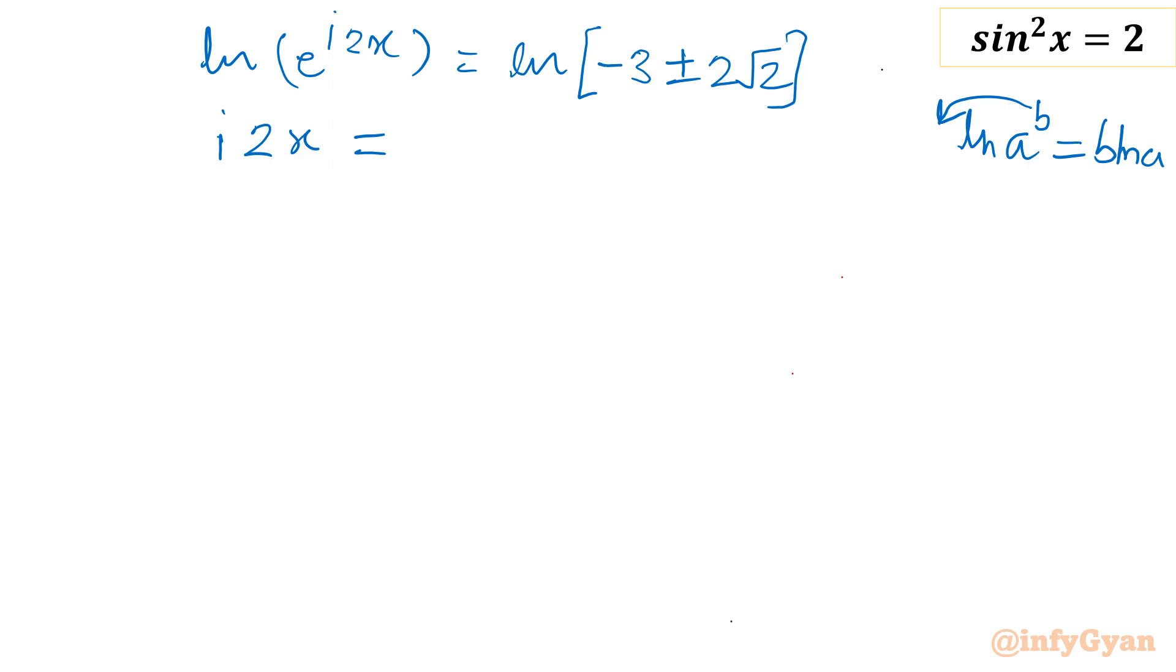This will become i times 2x equal to, if you will solve this ln, you will be having two values. See, this value can be written in terms of e also. If you are finding this value, then you can write ln. Then I will have two values actually. I will write 0.172 and negative 5.828. These two values.